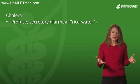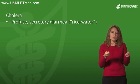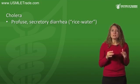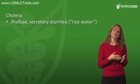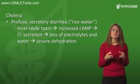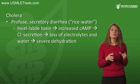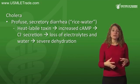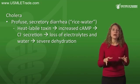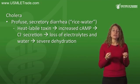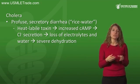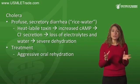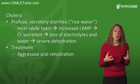The diarrhea is referred to as rice-water diarrhea because it looks like water after washing rice. As mentioned when discussing ETEC, Vibrio cholerae produces a heat-labile toxin which activates cyclic AMP, leading to chloride secretion and eventual loss of large amounts of electrolytes and water. Mortality is high because of severe dehydration, so treatment is aggressive oral rehydration.